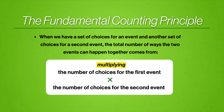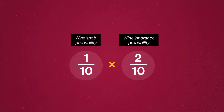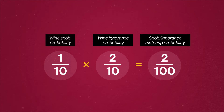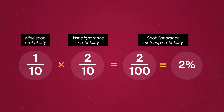The fundamental counting principle says if there are two events, the total number of ways both events can happen is the number of ways the first event can happen multiplied by the number of ways the second event can happen. The probabilities we have for each event tell us the proportion of ways each event can happen out of all the possible outcomes. So when we multiply them, we get the number of ways both events can happen out of all the possible outcomes — which looks a lot like a probability. The probability of two independent events both happening is simply the probability of the first event multiplied by the second.